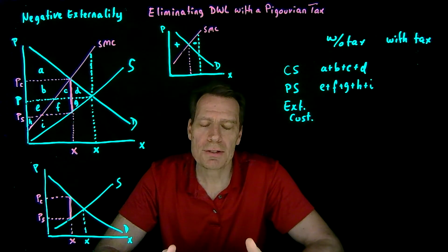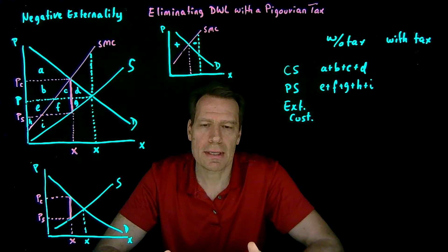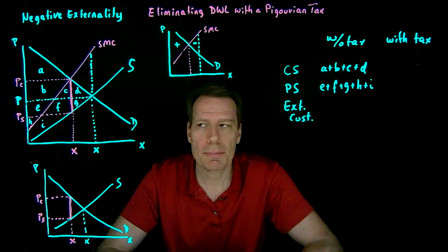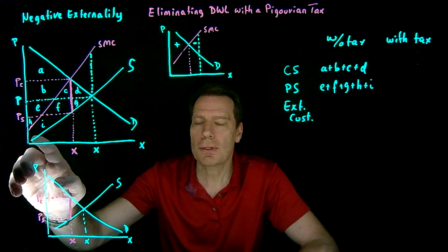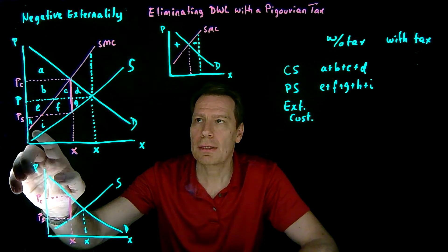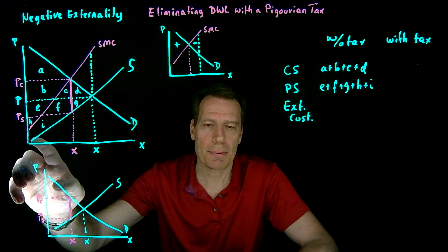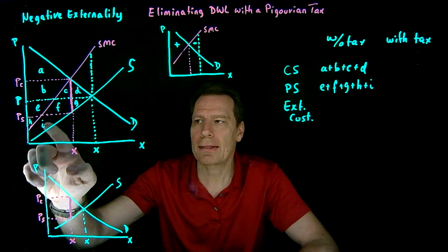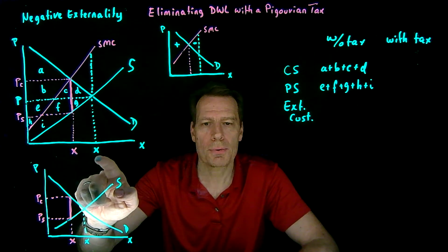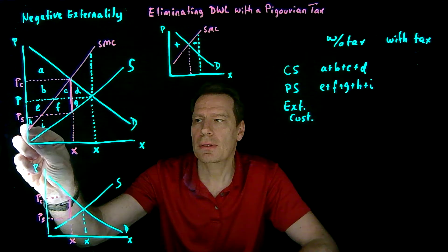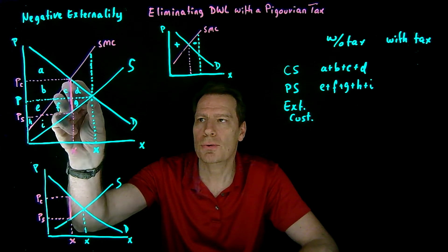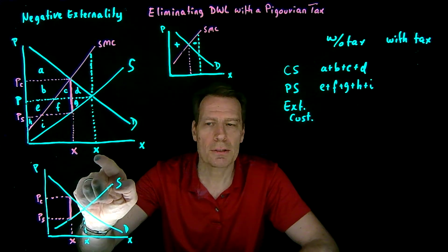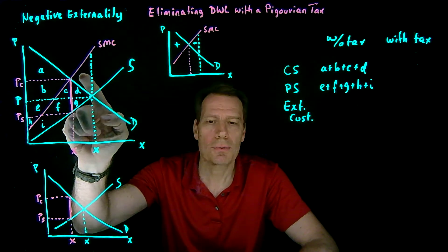Now how much of an externality cost is there in this case? In other words, how much is the cost that's imposed on non-market participants? Well, for each unit that's being produced, the difference between the social marginal cost and the supply curve is that externality cost. So we have to add up all of those for the total quantity that's produced. So that'll give us that entire area between the social marginal cost and the supply curve, up to the quantity that's produced.